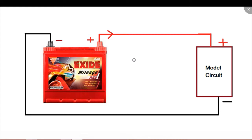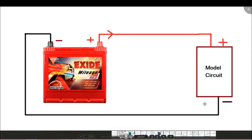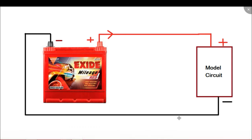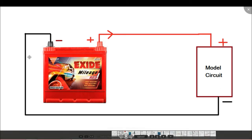Here we can see that we are connecting this battery to a circuit. The positive terminal of the battery is connected to the positive terminal of our circuit and the negative terminal of the battery is connected to the negative terminal of our circuit. In this case our connection is correct and the current will flow from this terminal to this terminal, so our circuit will work properly and we will get the proper output.